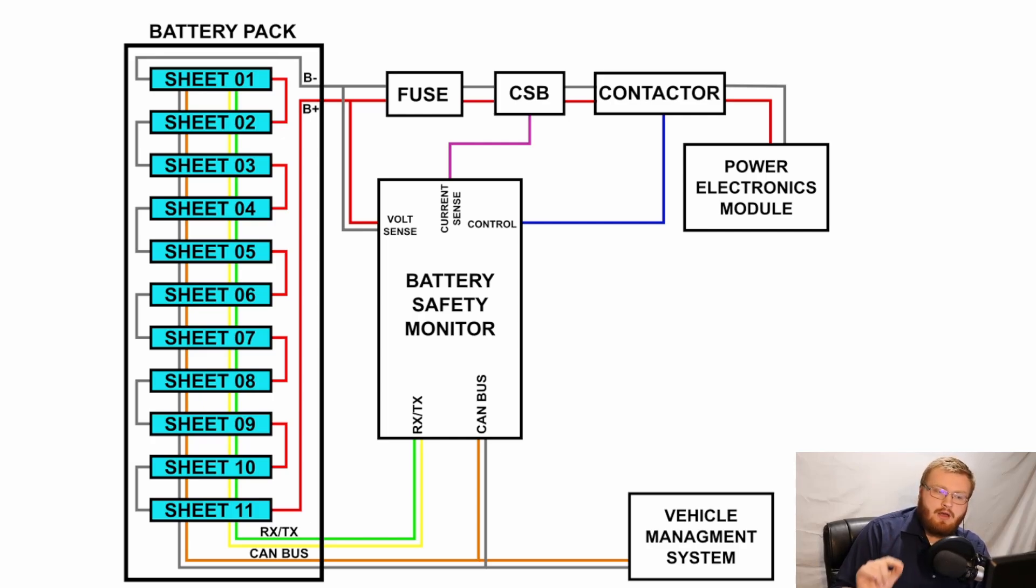Now the second thing that the battery safety monitor will monitor is the current. So that is what this is here, is the current sense board. And this is actually a module that is baked into the battery safety monitor according to the theory of operation. And it will monitor the average current and report that back to the vehicle management system.